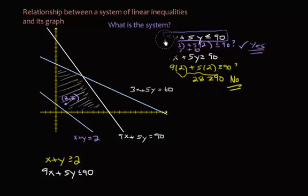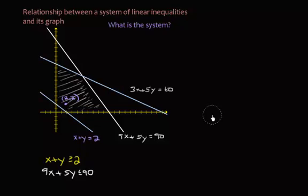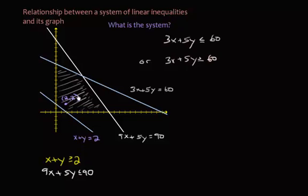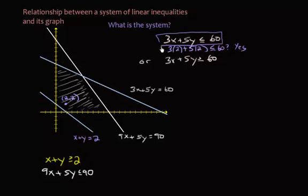We have one more inequality. For the last one, it's going to be either 3x plus 5y less than or equal to 60, or 3x plus 5y greater than or equal to 60. We pick our test point 2 comma 2 and plug it in: 3 times 2 plus 5 times 2 - is that less than or equal to 60? That's 6 plus 10, which is 16. It's definitely less than 60. So this is our inequality: 3x plus 5y less than or equal to 60.